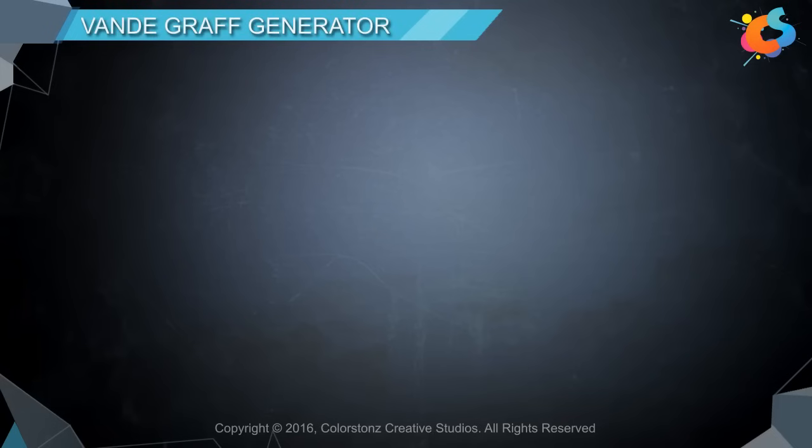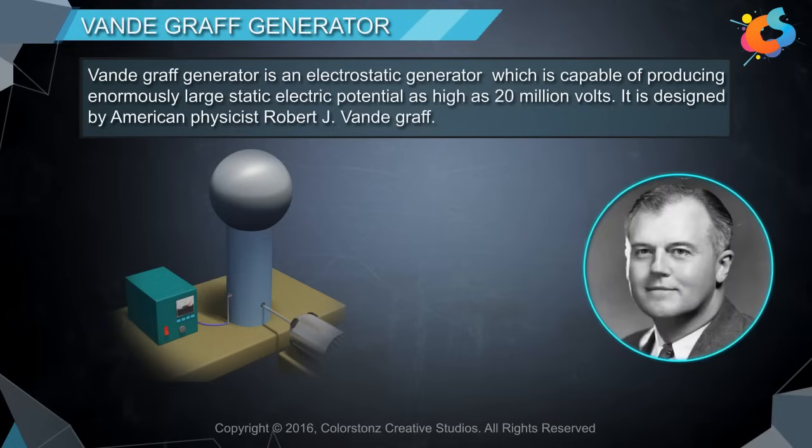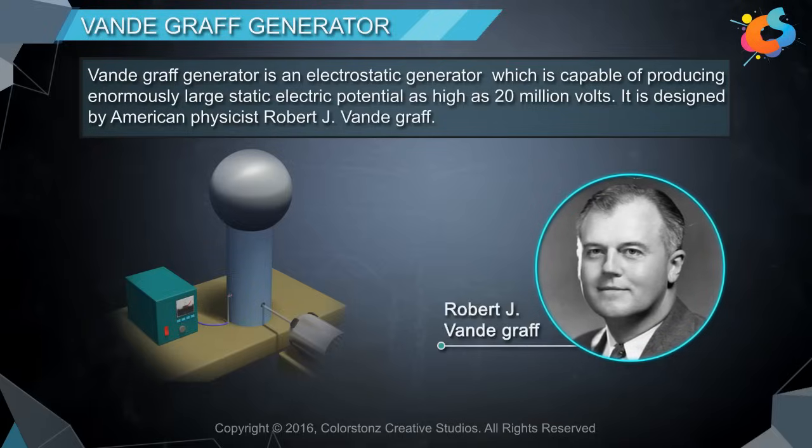Van de Graaff Generator is an electrostatic generator which is capable of producing enormously large static electric potential as high as 20 million volts. It is designed by American physicist Robert J. Van de Graaff.